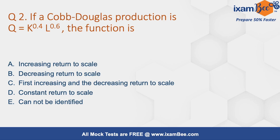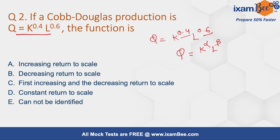Question number 2: If a Cobb-Douglas production function is defined as Q equals K^0.4 L^0.6, what is the return to scale? In the Cobb-Douglas production function represented as K^alpha L^beta, alpha and beta are output elasticities — alpha for capital and beta for labor.